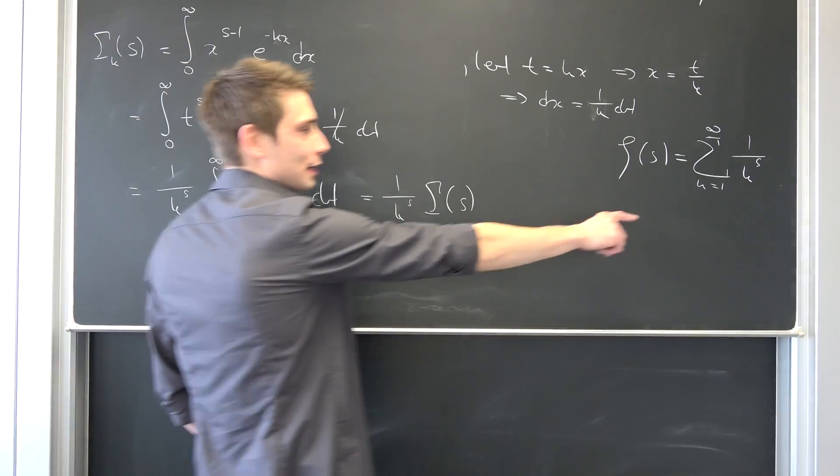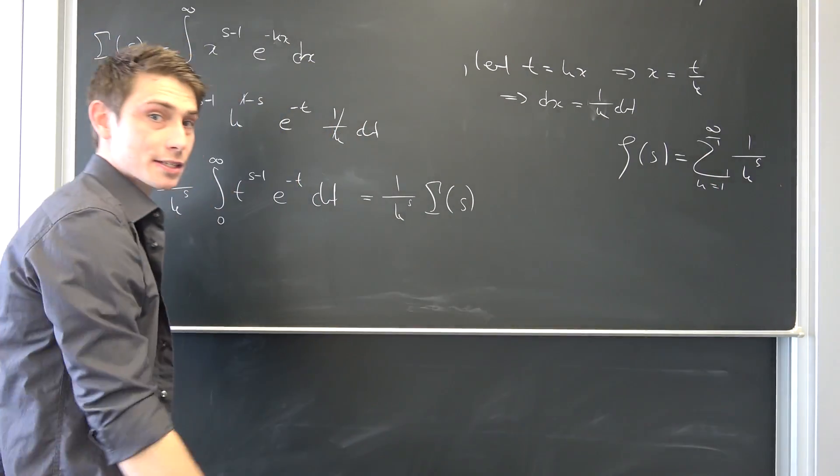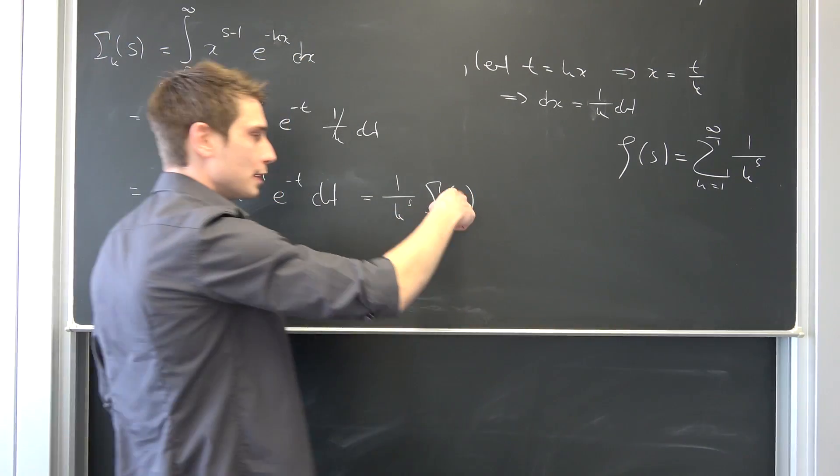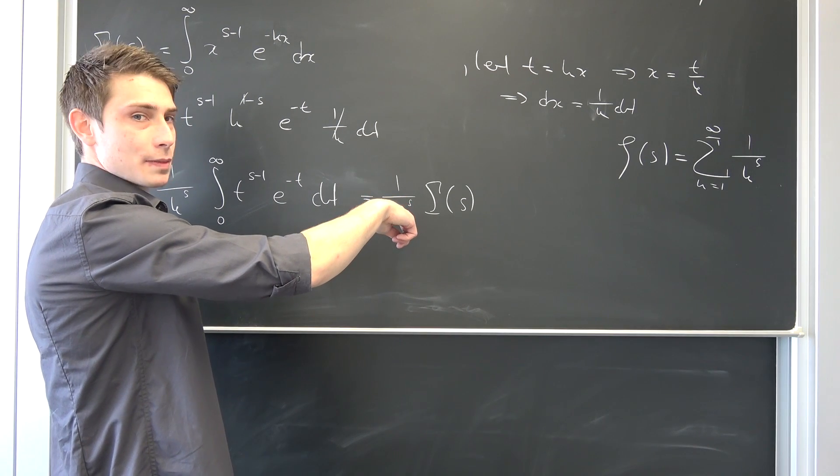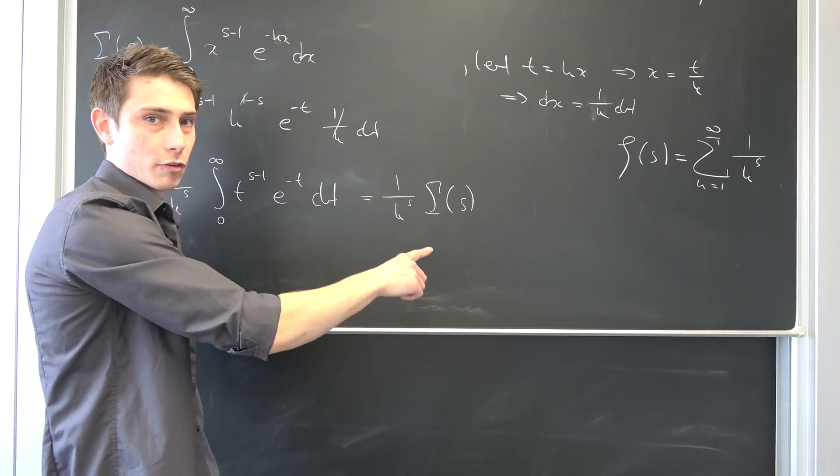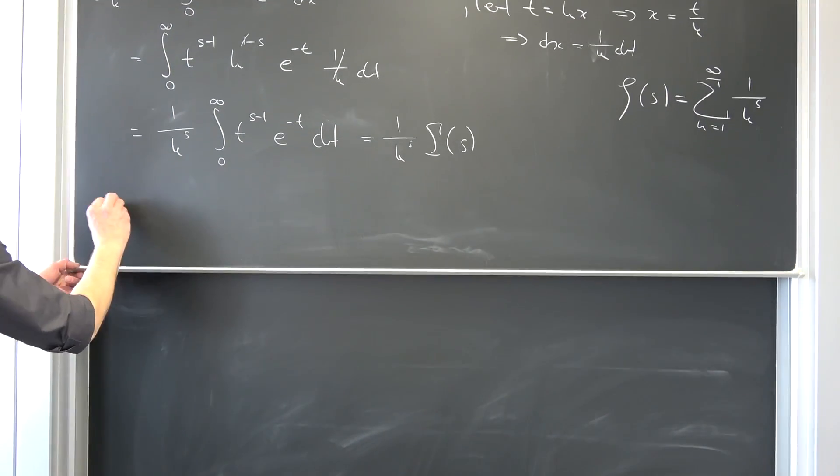Why not sum both sides from k equals to 1 to infinity? If we would just sum this side of the matter, then we would actually get the Riemann zeta function of s times gamma of s. So let's do this.